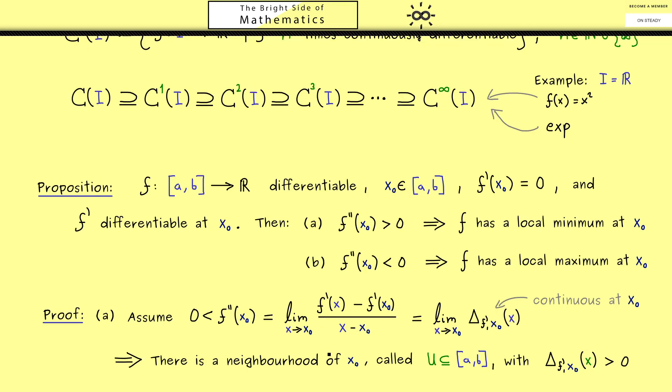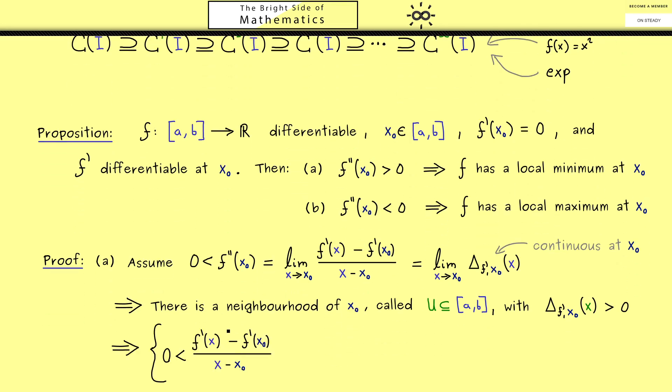Hence here we find exactly two cases. In order to see this let's remove our f' of x0 and then we have a nice fraction here, which is as we know positive. So either the numerator and the denominator are positive or they are both negative. Other things we cannot have. Now because x comes from the neighborhood u we are either on the left hand side of x0 or on the right hand side. If we are on the left hand side the denominator is negative and therefore f' of x0 has to be negative as well. And then of course on the right hand side we find the positive sign.